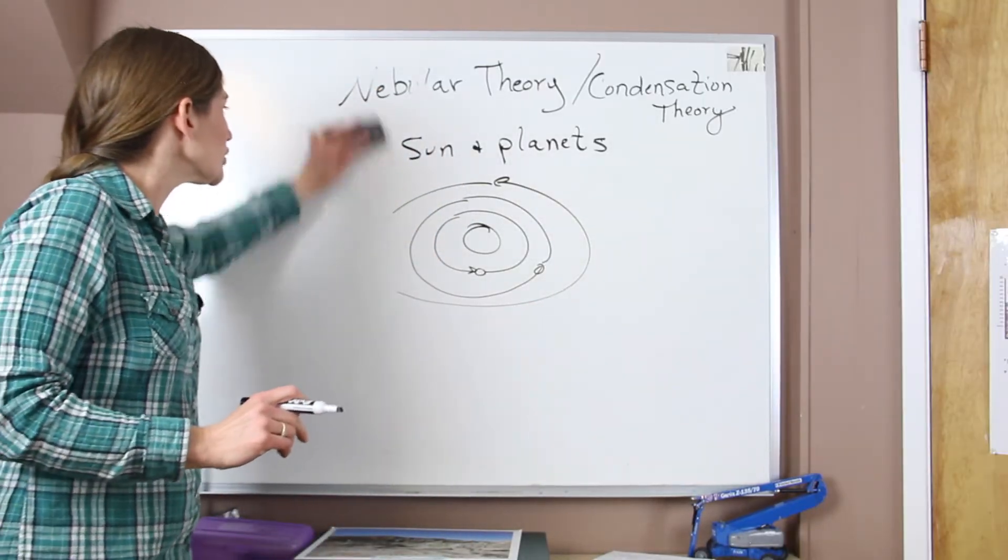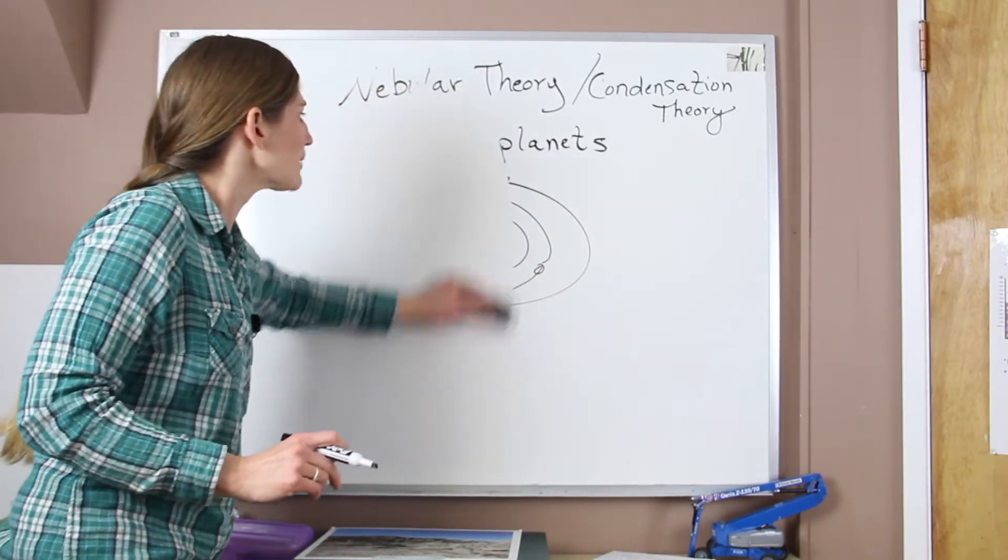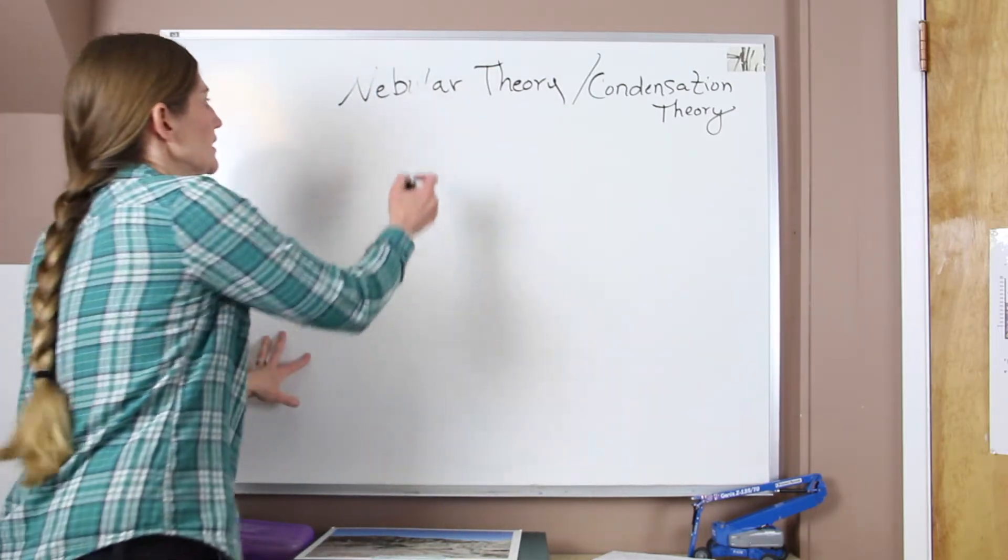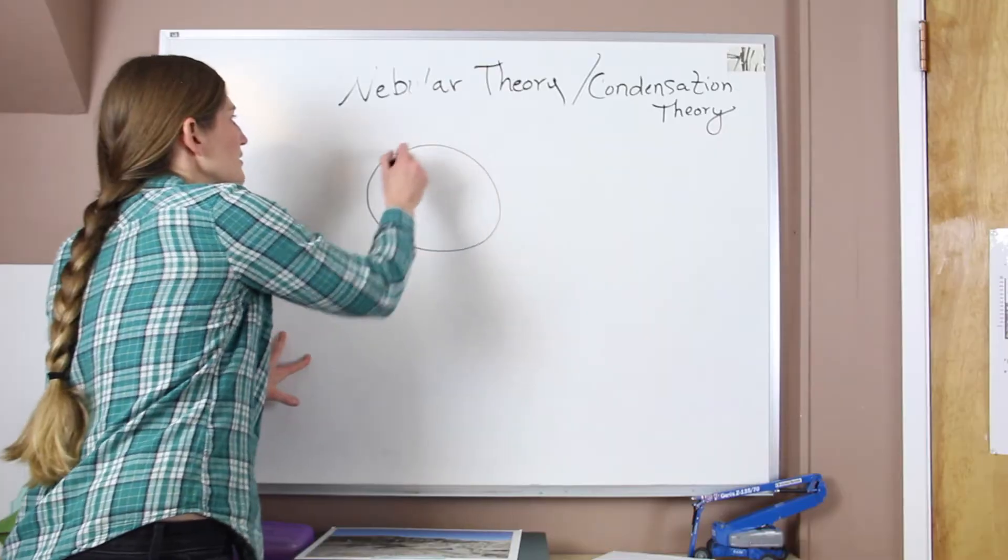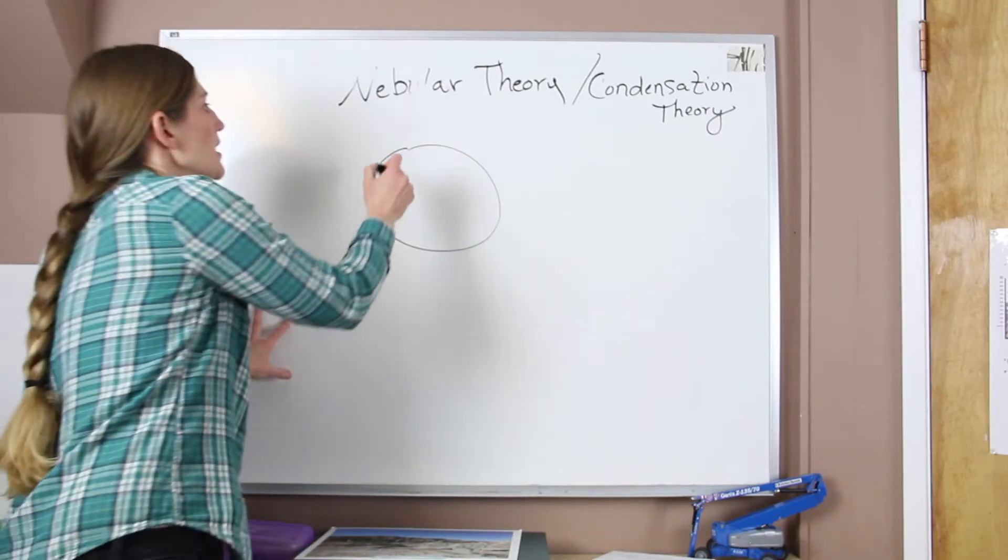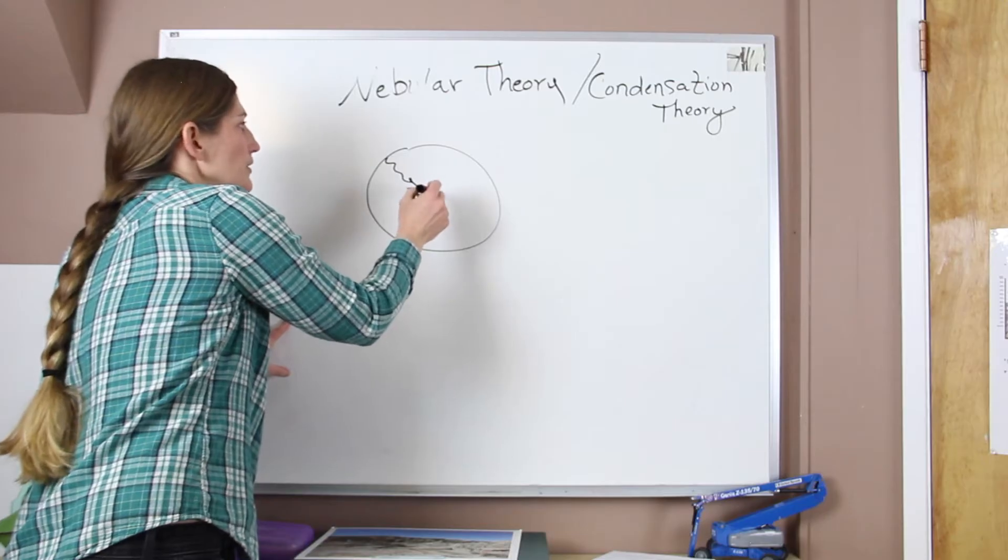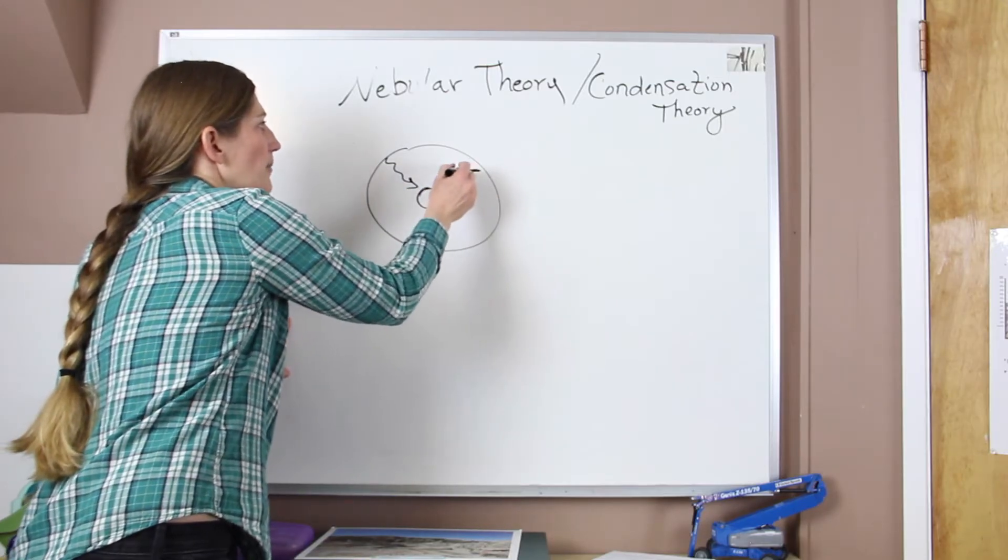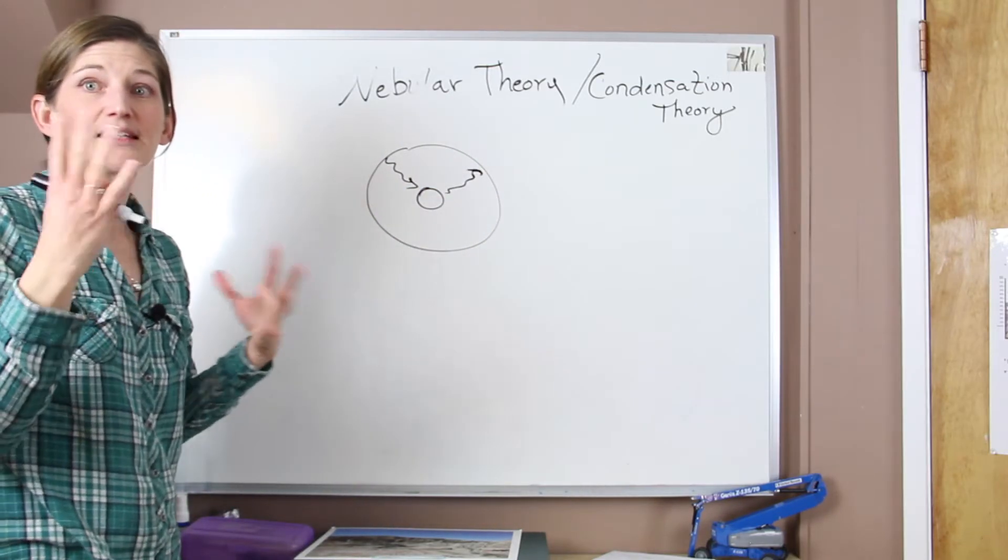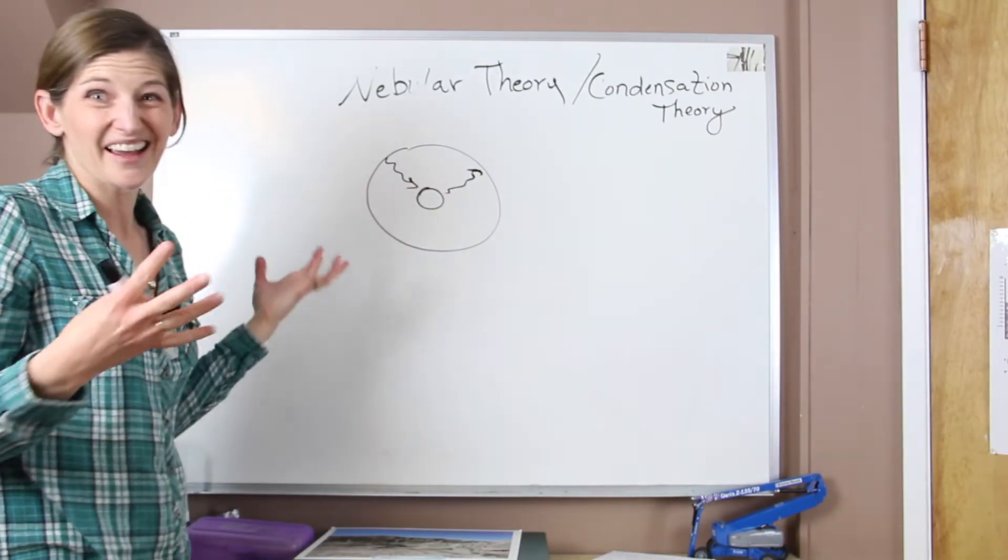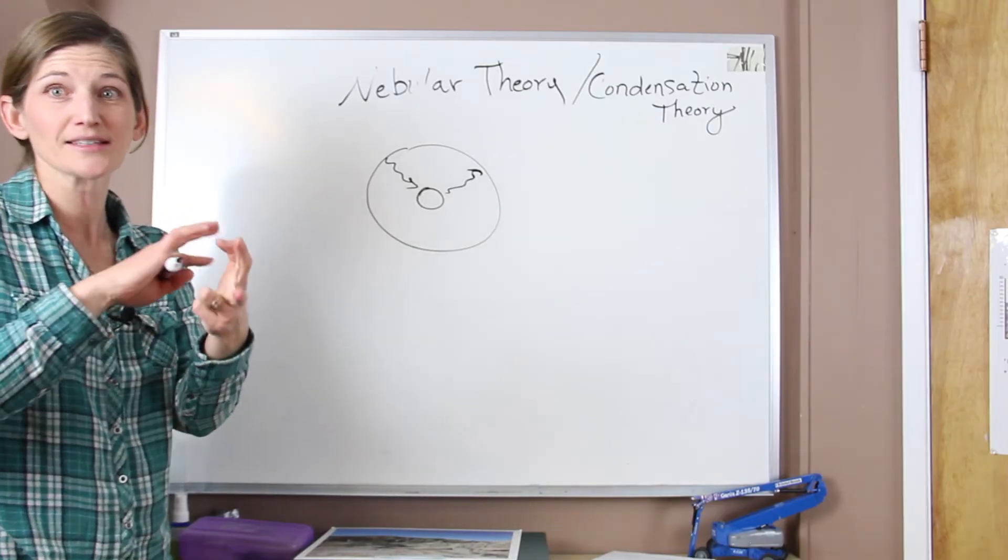So now when we look at the early earth, kind of going back to that planetesimal idea, it started out as homogenous. So all of the accretion of that material, it's kind of all there. But over time, the heavier stuff moves in towards the center and the lighter stuff migrates to the outside. This leads to some internal stratification of the earth. And that kind of sets up what we see today. We have a core, a mantle, and a crust.